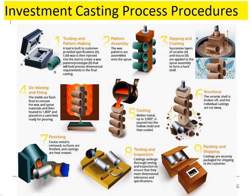Investment casting process procedure: generally, a wax pattern is coated with a ceramic material which, when hardened, adopts the internal geometry of the desired casting. In most cases, multiple parts are cast together for efficiency by attaching individual wax patterns to a central wax stick called a sprue. The wax is melted out of the pattern — which is why it is also known as the lost wax process — and molten metal is poured into the cavity. When the metal solidifies, the ceramic mold is broken off, leaving the near-net shape of the desired part. Finishing, testing, and packaging complete the process.